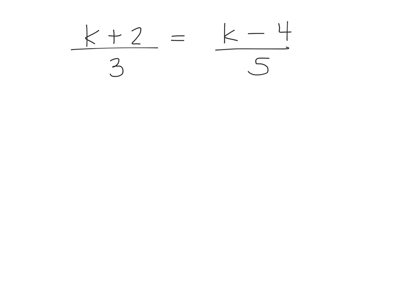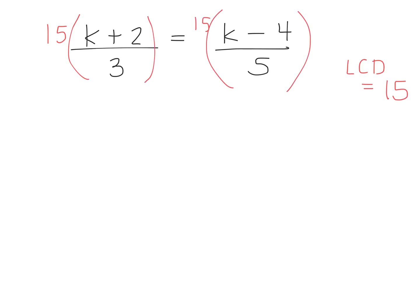One strategy to solve this is to figure out what the lowest common denominator is. We have a denominator of 3 and a denominator of 5. The lowest common denominator is 15, so I'm going to multiply each term by 15. This is the strategy I taught you yesterday — multiply by the lowest common denominator.